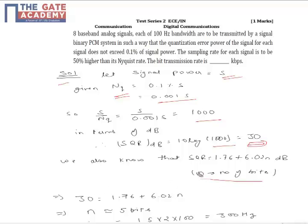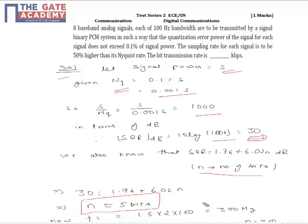On comparing the two SNR of the same system, we get 30 equals 1.76 plus 6.02N. This implies that the value of N is approximately equal to 5. We will take N equal to 5.